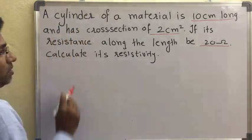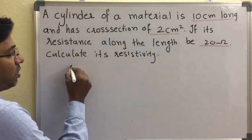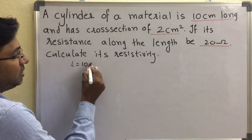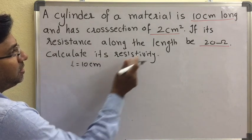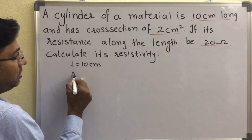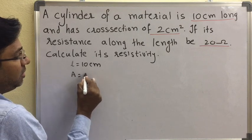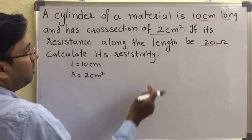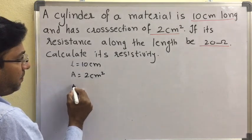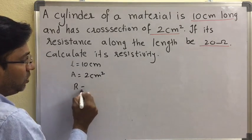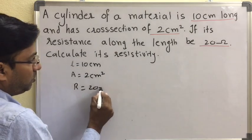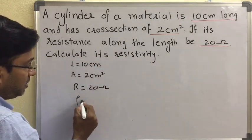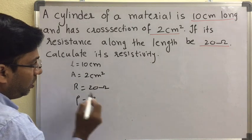In this question, length L is equal to 10 centimeters. Area of cross section A is equal to 2 centimeter square. Resistance R is equal to 20 ohms. We have to calculate resistivity.